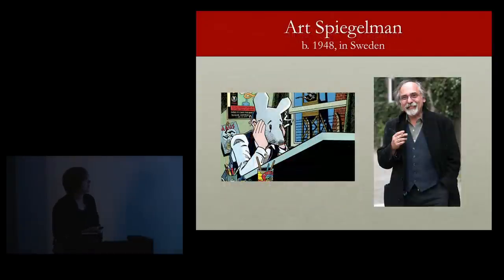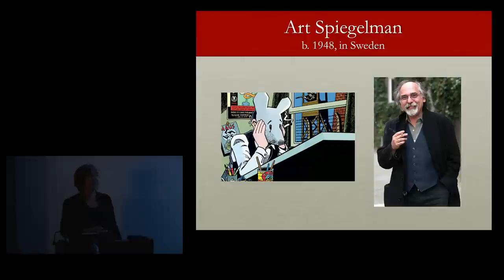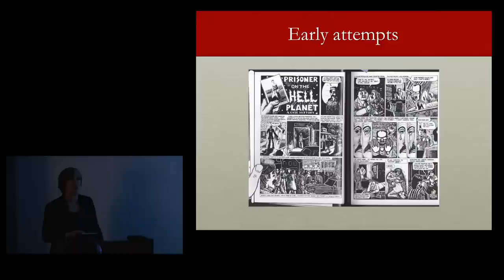Art Spiegelman is one of the most famous graphic artists, and one of the things he's most famous for is Maus. When Maus came out, it was a huge sensation — it won a special Pulitzer Prize, went into multiple printings, was translated into many languages, and has never been out of print. One of the things people found extraordinary was that it was a comic book about the Holocaust. Since you're going to be working on your own graphic pieces, I wanted to show you some of his early tries. He didn't just sit down one day and create Maus — he was working on it for 13 years.